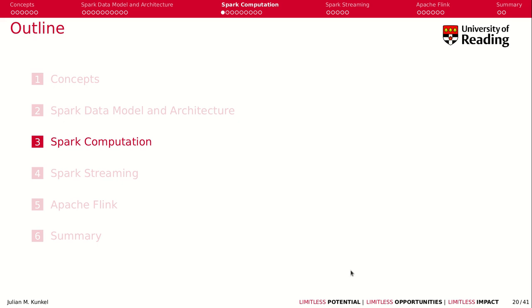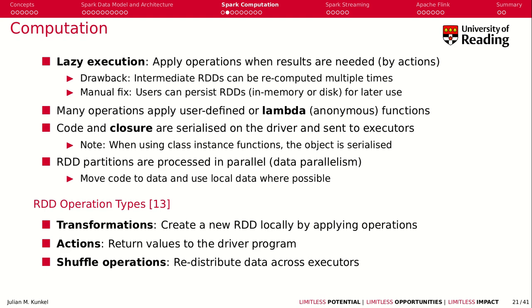Let's talk about how computation works under the hood. Spark uses lazy execution, meaning you only apply operations when the results are actually needed. Only actions trigger this kind of execution. A drawback is that intermediate RDDs may need to be recomputed multiple times for different outputs. For this reason, you can persist RDDs in memory or disk for later use — caching helps you do this operation only once.